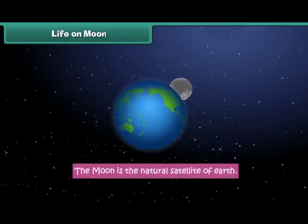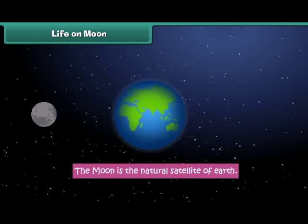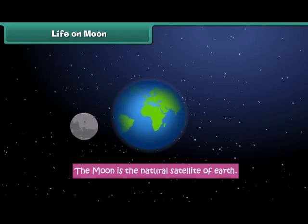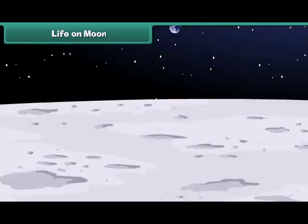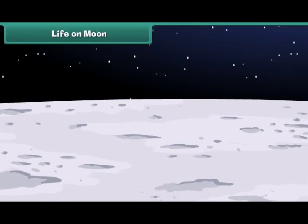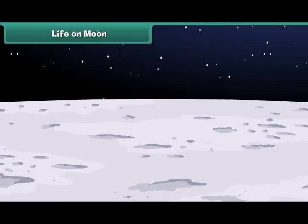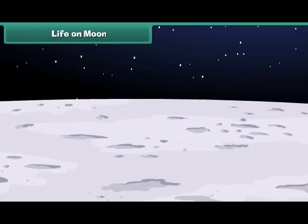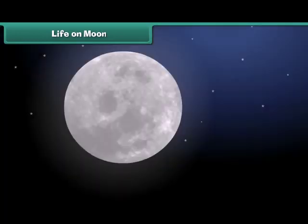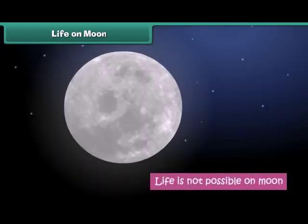Though the Moon is the natural satellite of Earth, it is very different from Earth. There is no air, water or food on the Moon. Therefore, life is not possible on it.